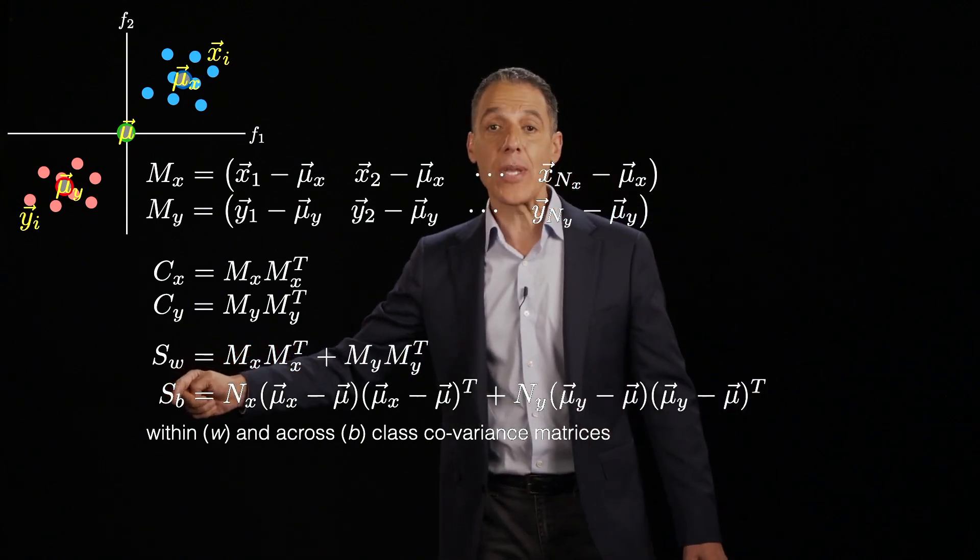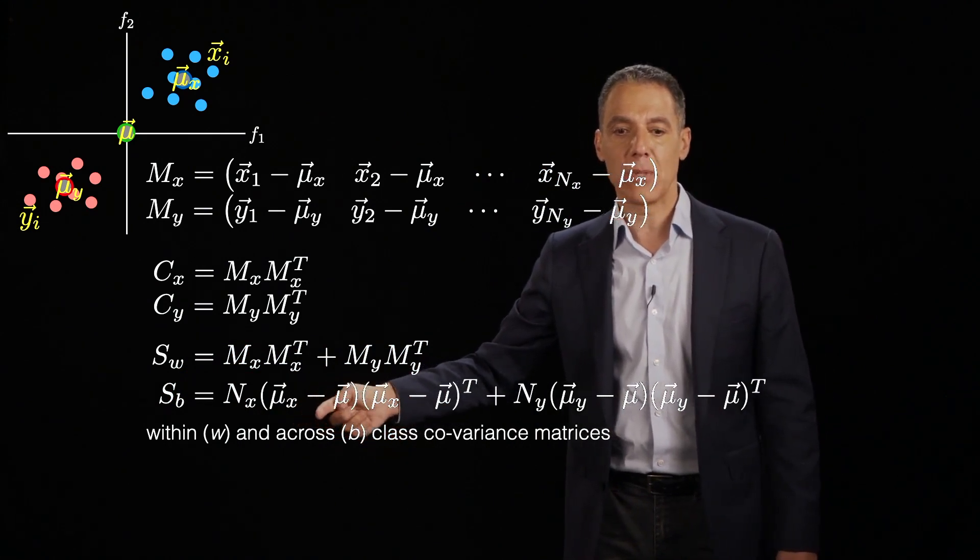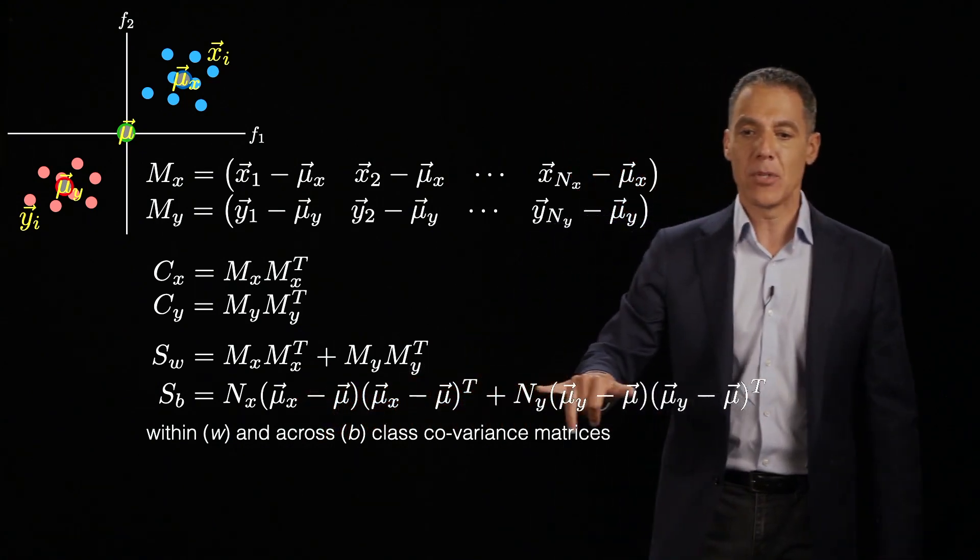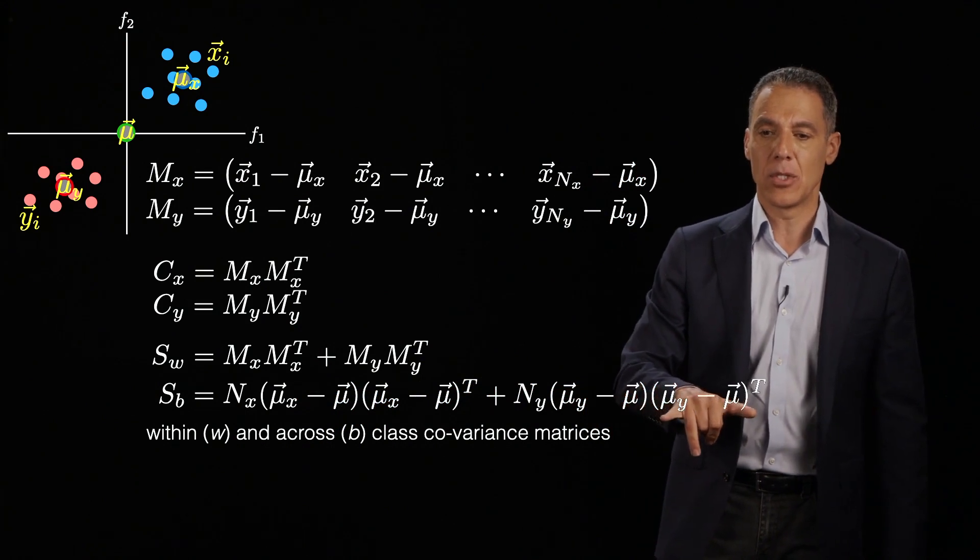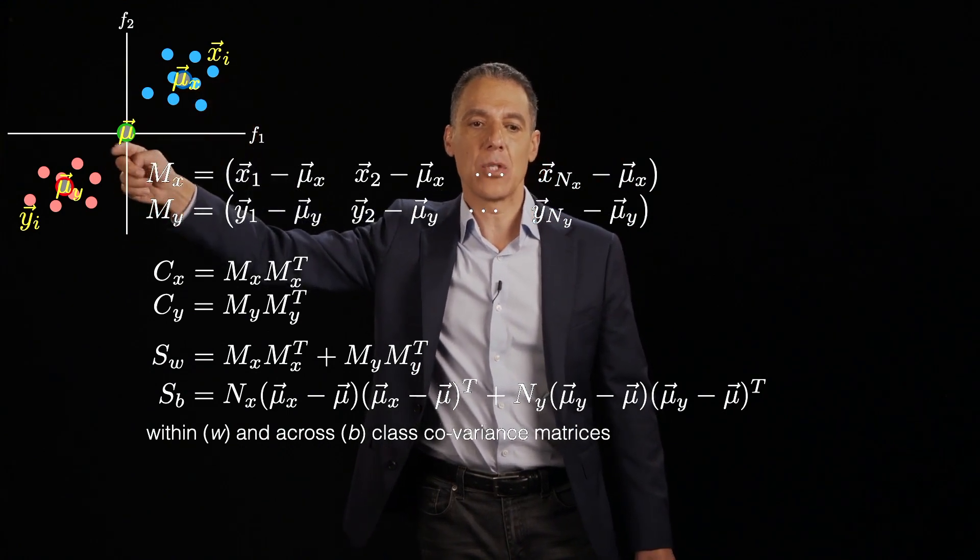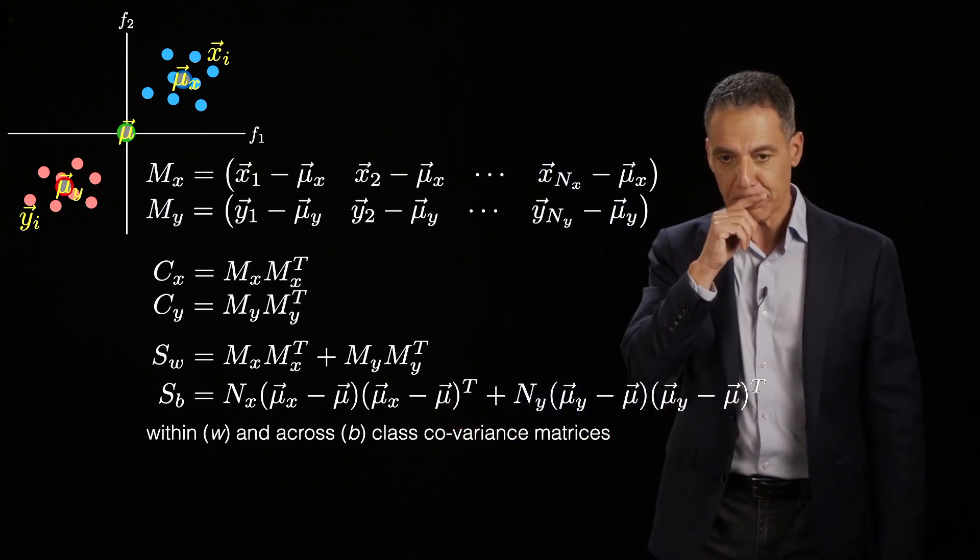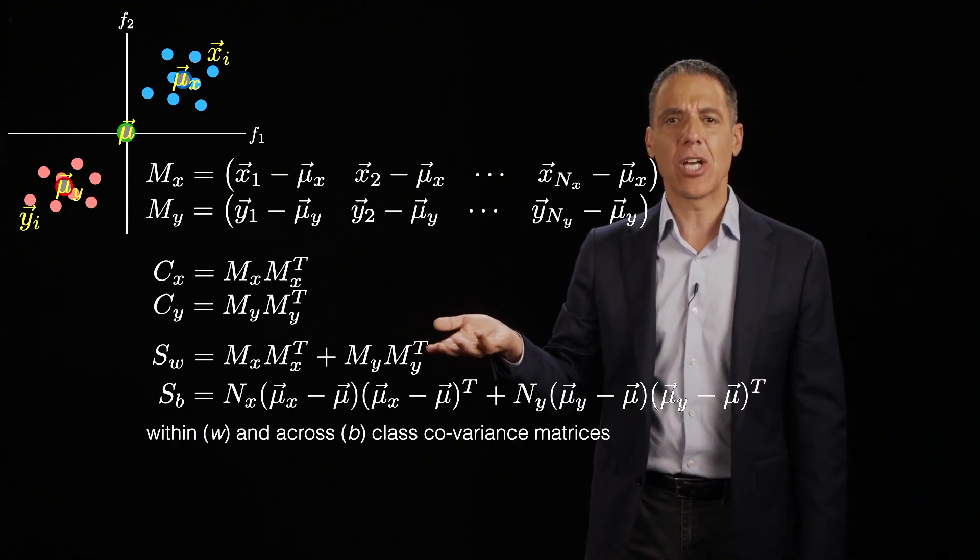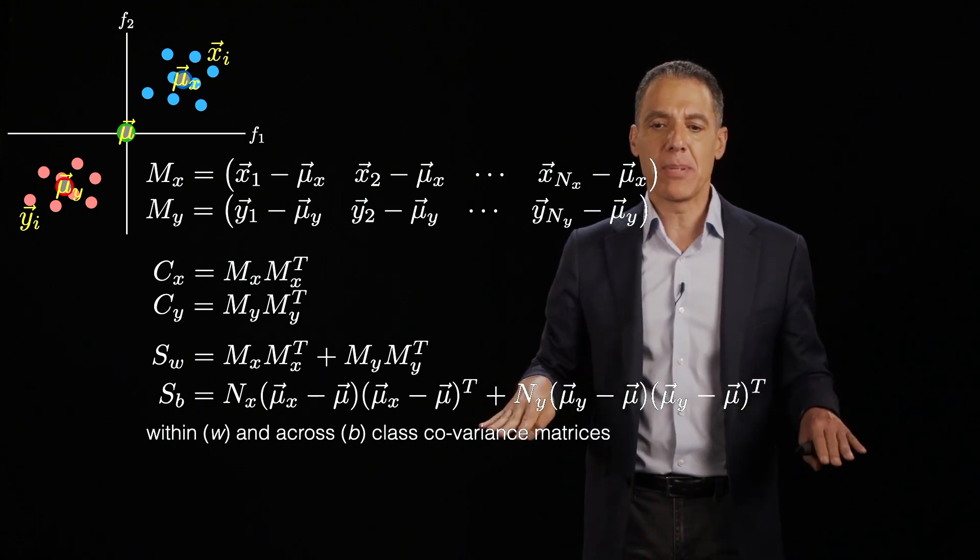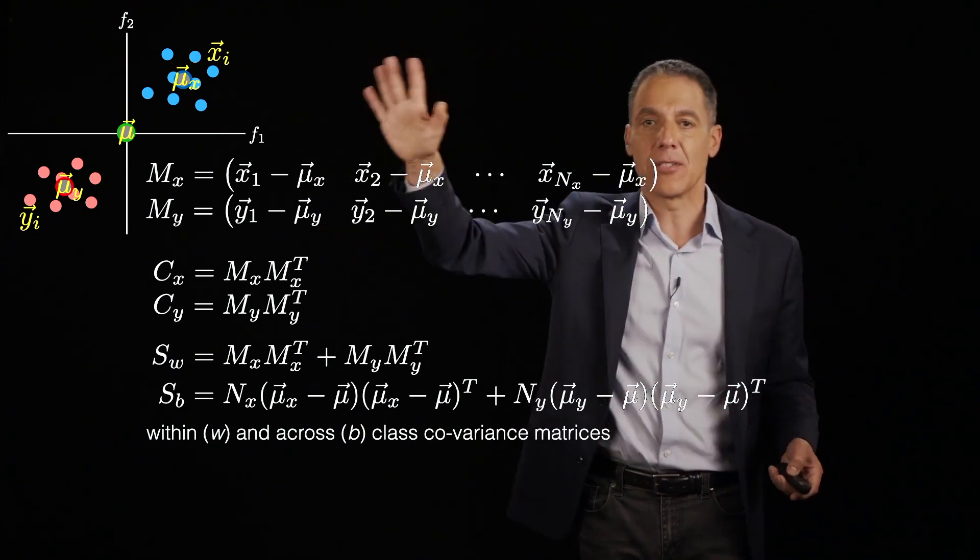And I'm going to define the between class variance, how spread apart are the classes, as the following. Mu x minus mu times mu x minus mu transpose. Think about that as the variance along this dimension. And then mu y minus mu times mu y minus mu transpose. So this is telling me something about where is mu x relative to mu relative to mu y, the between class spread. So now I have these two matrices. SW embodies how distributed the data is within itself. And SB embodies how distributed the center of mass is of the two classes relative to the entire data spread.